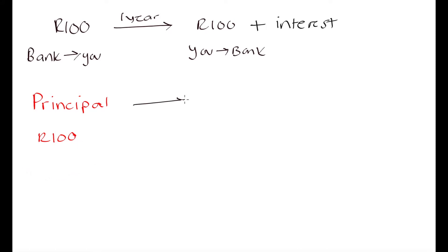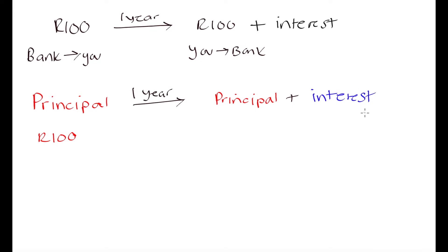In this case, the 100 Rand is our principal — that is how much we are borrowing from the bank to begin with. At the end of the term, in this case one year, you are going to pay back the principal, and in addition to the principal you will pay back interest. That interest is what makes the transaction worthwhile for the bank — it is the extra amount you pay on top of your principal.